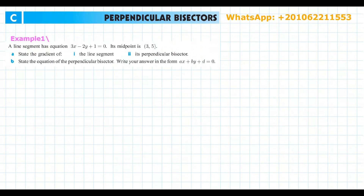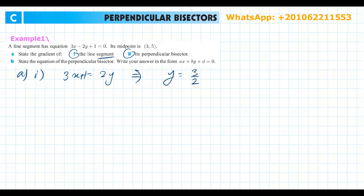In the next example, a line segment has equation 3x - 2y + 1 = 0 and the midpoint is (3, 5). Part (a): find the gradient of the line segment. Rearranging: y = (3/2)x + 1/2, so the gradient of the line segment is 3/2. The negative reciprocal gives the perpendicular bisector gradient: -2/3.